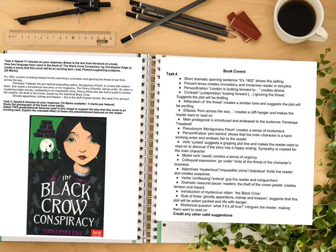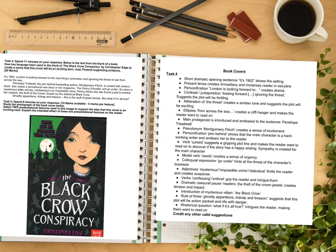The modal verb 'needs' creates a sense of urgency. Colloquial expression 'go under' hints at the threat of the character's business — again, makes it intriguing and thrilling. Adjectives — mysterious, impossible crime, diabolical — thrill the reader and create suspense. Verbs — confessing and enthrall — grip the reader and intrigue them. Dramatic colon pause before 'the theft of the crown jewels' creates tension and impact. Introduction of the mysterious villain, the Black Crow, and the nomenclature of their name. Rule of three — ghostly apparitions, kidnap and treason — suggests this plot will be action-packed and rife with danger.